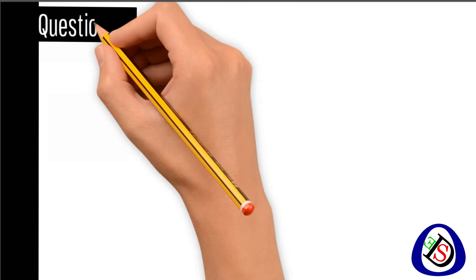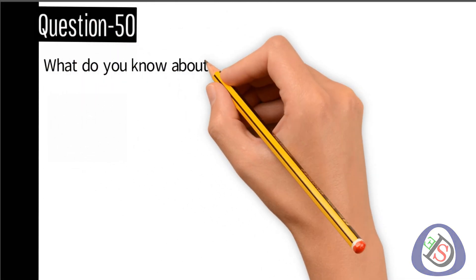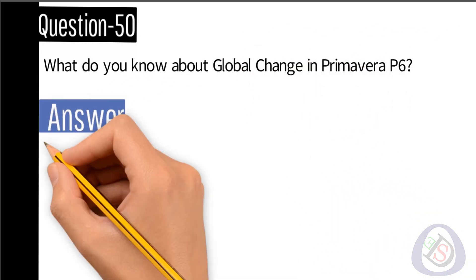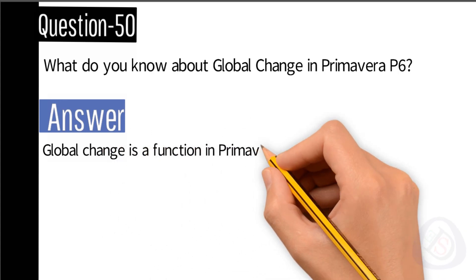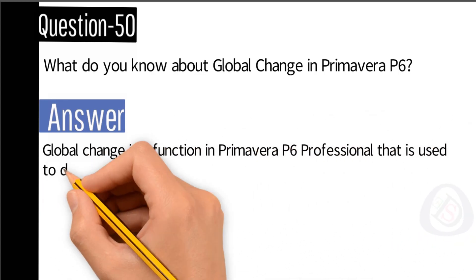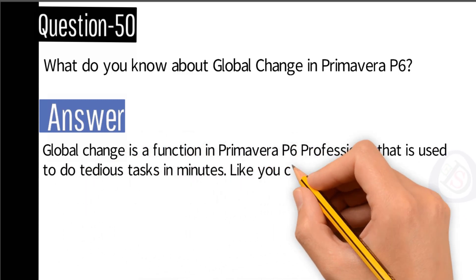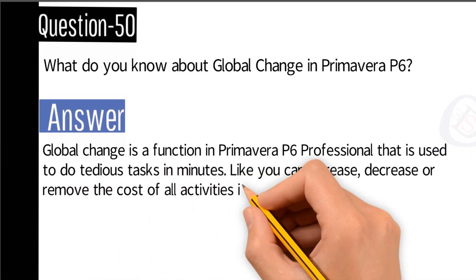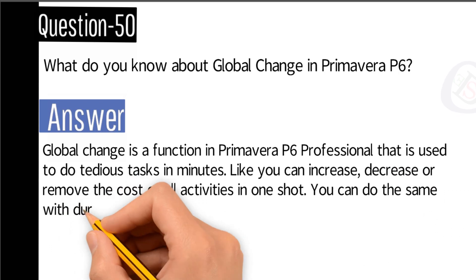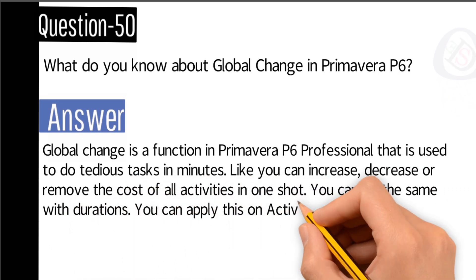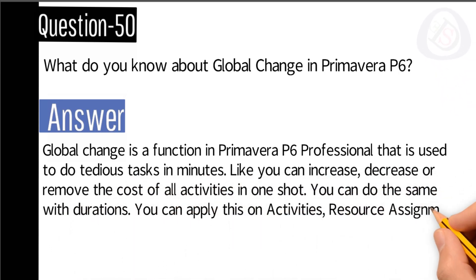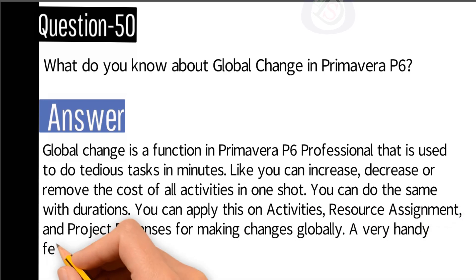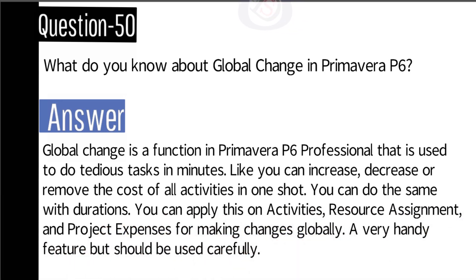Question number 50: what do you know about global change in Primavera P6? Answer: global change is a function in Primavera P6 Professional that is used to do tedious tasks in minutes. For example, you can increase, decrease, or remove the cost of all activities in one shot. You can do the same with durations, and apply this on activities, resource assignments, and project expenses. A very handy feature, but it should be used carefully.